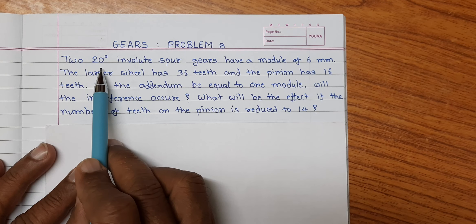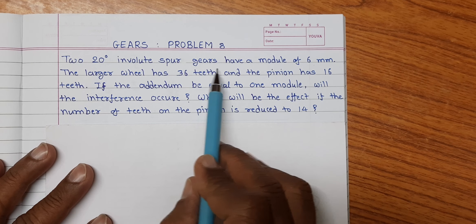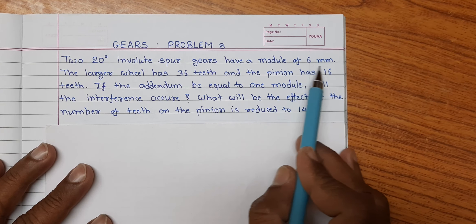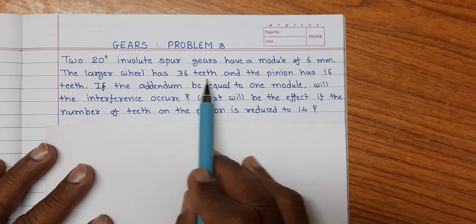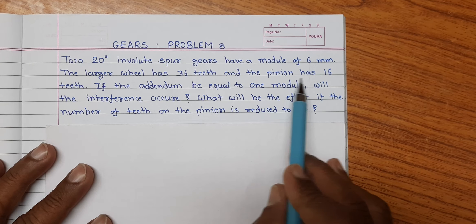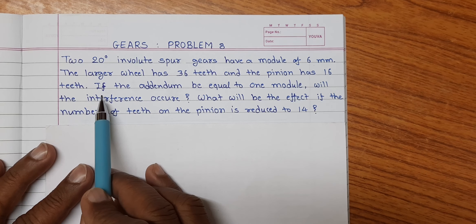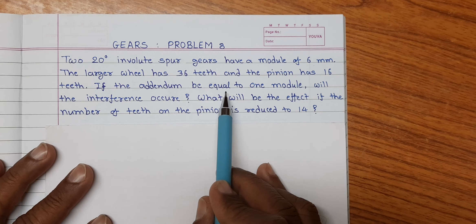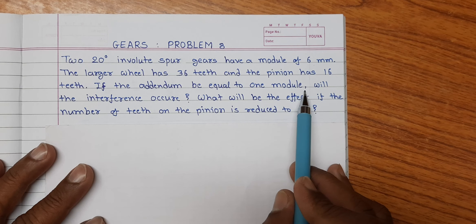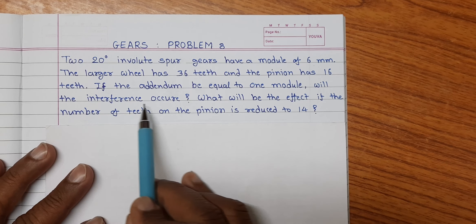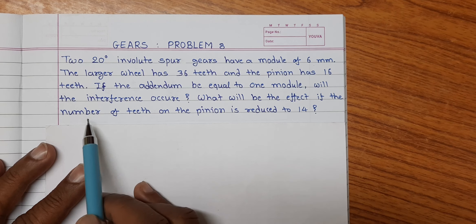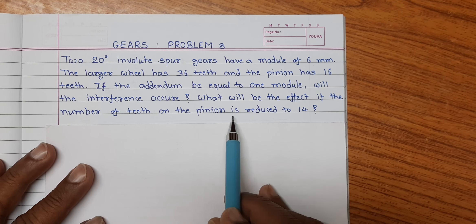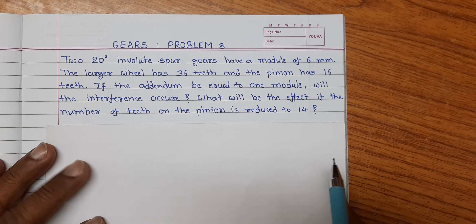Two 20 degree involute spur gears have a module of 6 mm. The larger wheel has 36 teeth and the pinion has 16 teeth. If the addendum be equal to 1 module, will the interference occur? What will be the effect if the number of teeth on the pinion is reduced to 14?